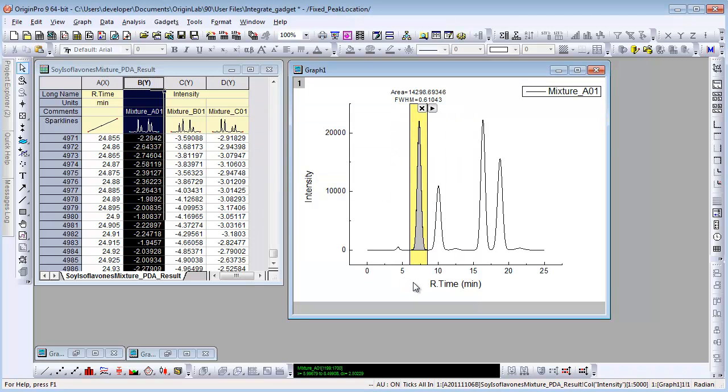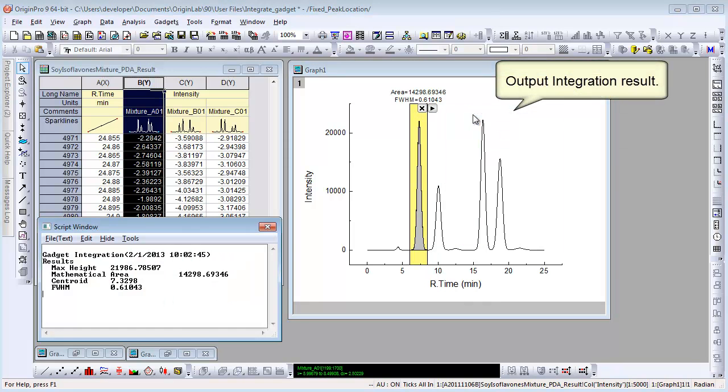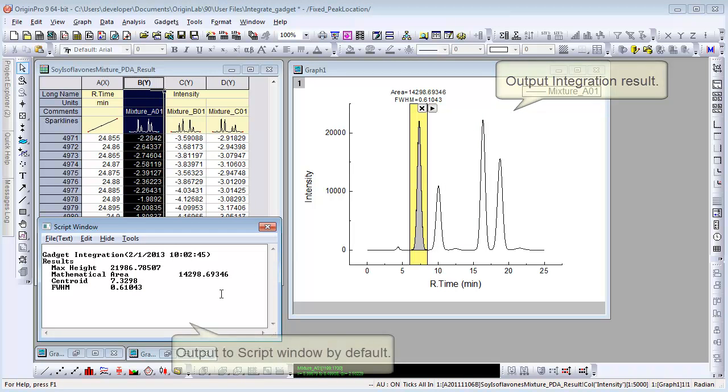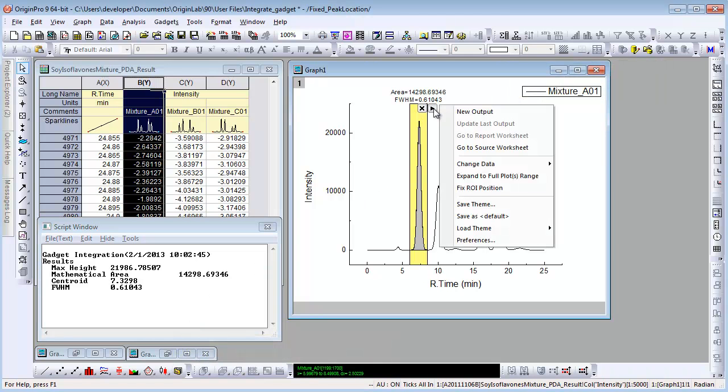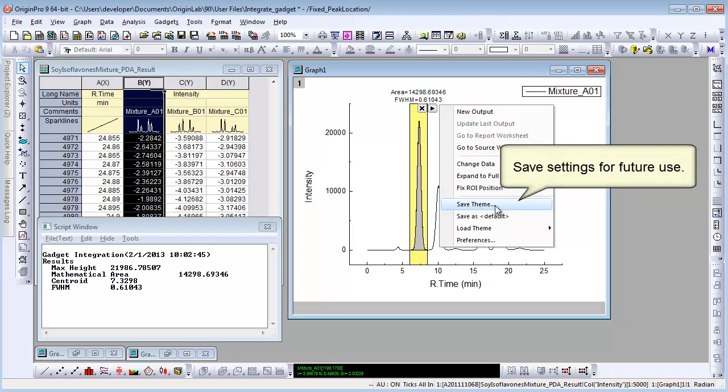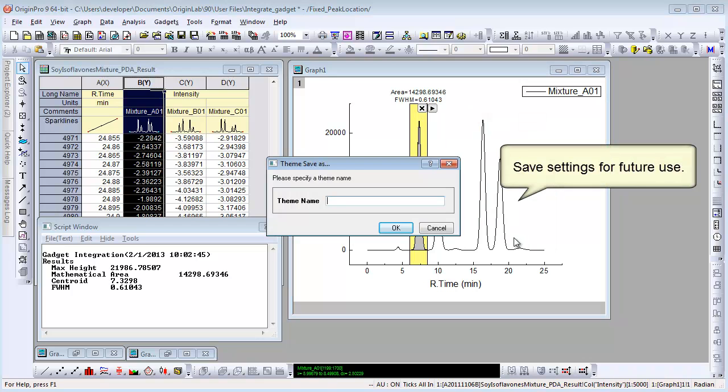Then we can choose New Output to dump the integration result. By default it's dumped to Script Window. You can save the settings as a theme file for future use. Let's call it First Peak.